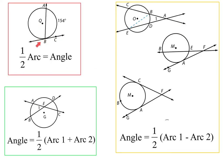To summarize: when intersecting on the circle, you only worry about one arc — the angle is one half the arc. When intersecting inside the circle, you take half of the two arcs added together. Anytime it is outside the circle, you take one half the difference — you subtract.